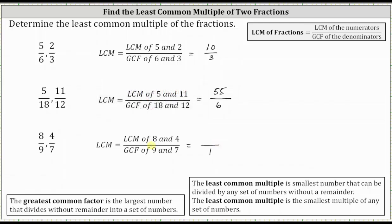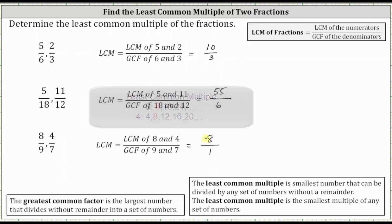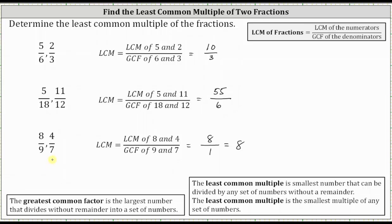The least common multiple of eight and four is the smallest number that can be divided by both eight and four, which would be eight. Notice here, eight over one simplifies to just eight. So eight is the least common multiple of 8/9 and 4/7, which means eight is the smallest number that can be divided by both 8/9 and 4/7, and it's also the smallest multiple of both fractions.